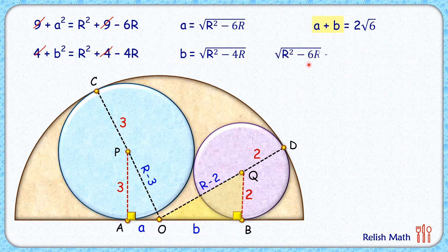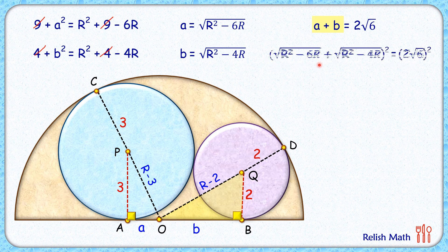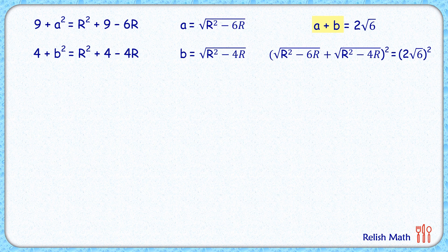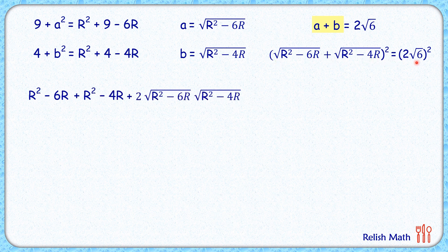To solve this, we'll need some algebra tricks. First, we'll square both sides. To open the brackets we need more space, so let's remove the diagram for now. Applying the (a+b)² identity on the LHS: the square root cancels, so a² becomes r²−6r, plus b², plus 2ab equals (2√6)² = 24.